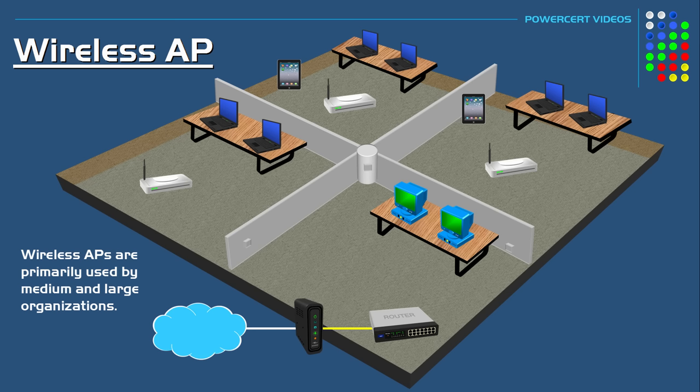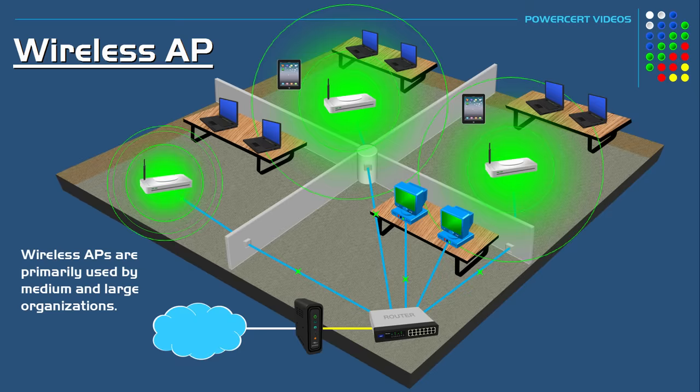Here we have a medium-sized office with desktop computers, laptops, and tablets. The desktop computers will connect to the organization's router using ethernet cables. But in order for the wireless laptops and tablets to connect to the network, this office is going to use wireless access points. The access points are going to be placed in strategic places, and each of them will connect to the router using an ethernet cable. Then they will all broadcast a wi-fi signal so that the laptops and tablets can connect wirelessly and join this network.